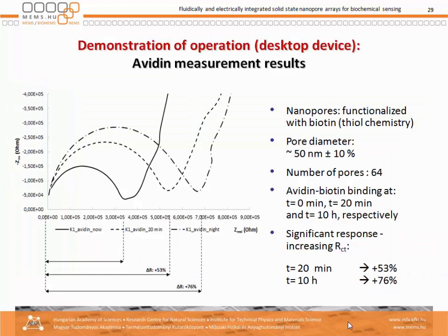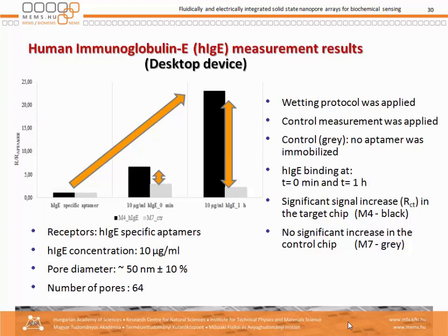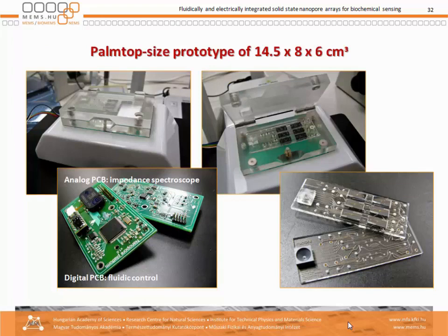Avidin measurement is taken as reference and we have the findings here. The pore diameter is approximately 50 nanometers with 64 pores, and we can see the concentration-dependent reading of the impedance curve after certain times: 0, 20 minutes, and 10 hours — so the system works and saturation can even be avoided.